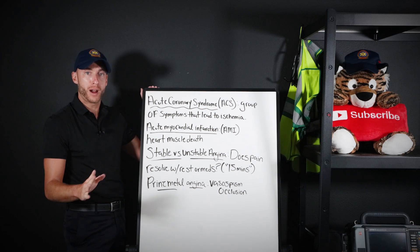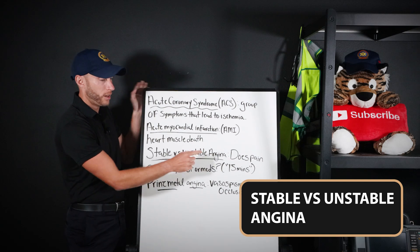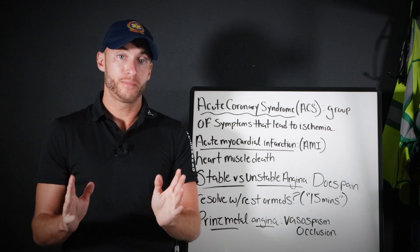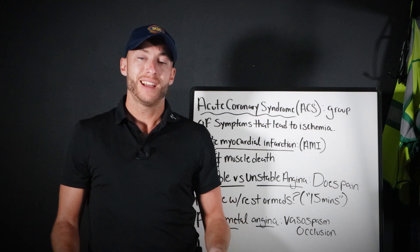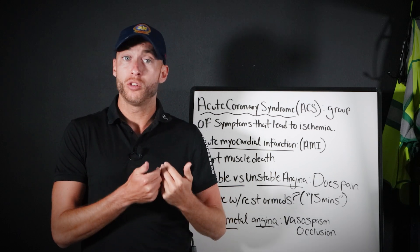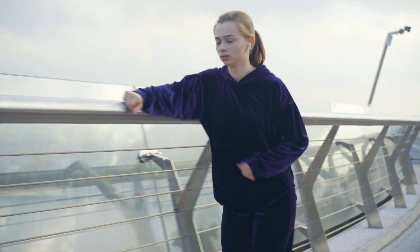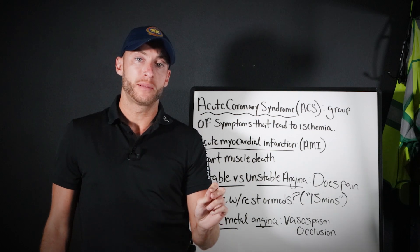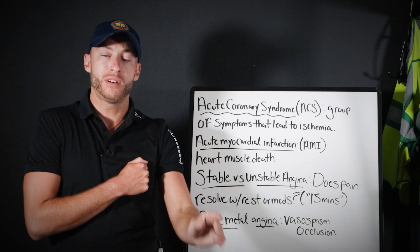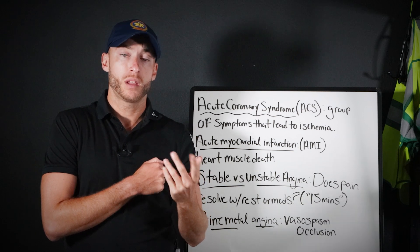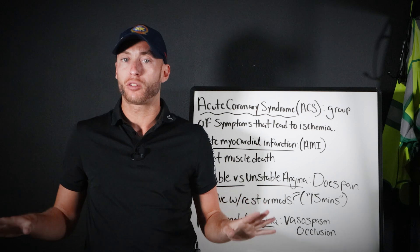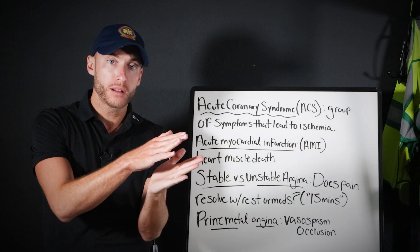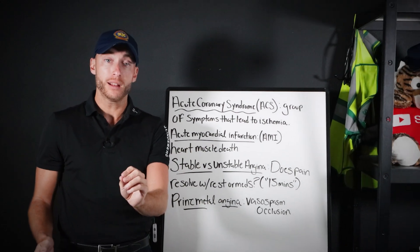A few more key terms: stable versus unstable angina. Angina involves classic chest pain and shortness of breath symptoms, whether someone's exercising or walking around. The difference between stable and unstable: if you have chest pain, sit down, take a nitroglycerin tablet or spray, and you feel better — or you stop exercising and feel better — that was stable angina. It was just a temporary narrowing of the artery that goes back to normal.